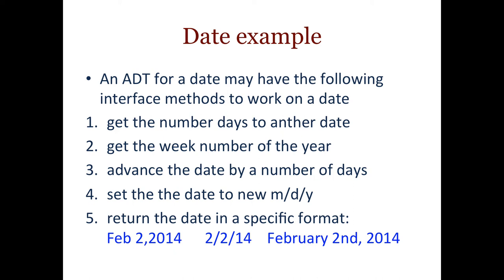Now let's do a date example. An abstract data type for a date may have the following interface methods: a method to get the number of days to another date, a method to get the week number of the year — so for a given date you can ask what week of the year it is, perhaps week 22. There might be a method that advances the date by a number of days, or a method that changes the date to a certain month, day, and year. We might also return the date in a certain format. How you represent the date internally doesn't matter — the implementation is independent of the interface.